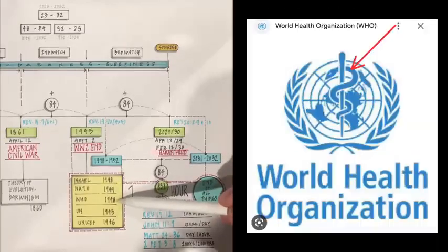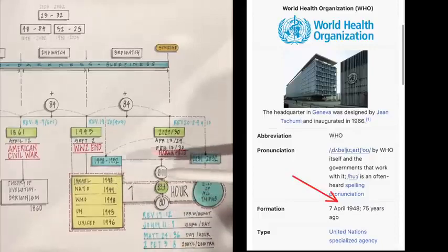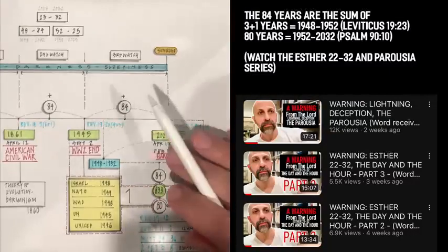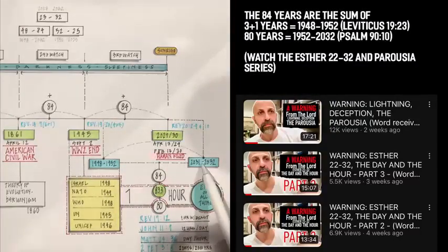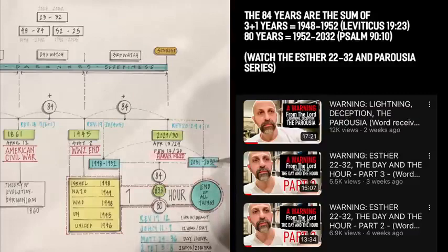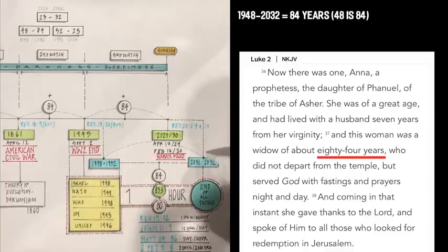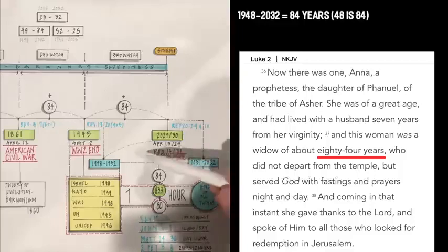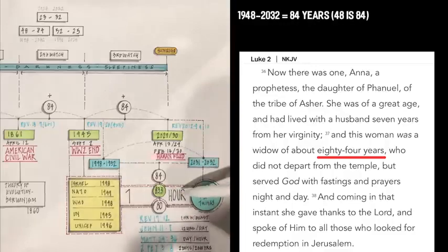And one of them, the WHO, was founded in the same year and the same month as Israel becoming a nation. Now, we already know and understand the 84-year pattern. And this goes from 1948 all the way to the end of all things. Please go and look at the latest calendars for a better understanding of the 84 years. But we know the 84 years very well. So, 1948 to 2032. And we know that this is Luke 2:36 or Anna, which, again, is part of another teaching. But we are aware of the 84 years as the final hour.